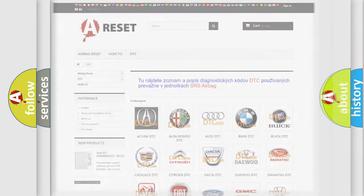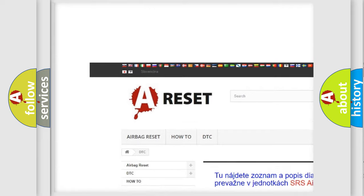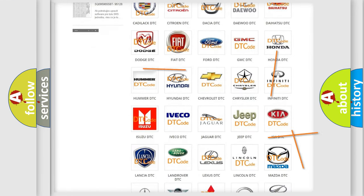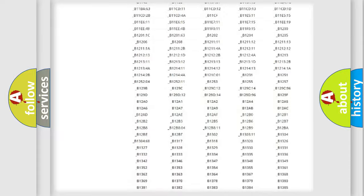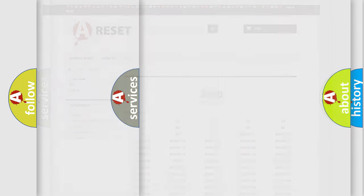Our website airbagreset.sk produces useful videos for you. You do not have to go through the OBD2 protocol anymore to know how to troubleshoot any car breakdown. You will find all the diagnostic codes that can be diagnosed in Jeep vehicles, and also many other useful things.